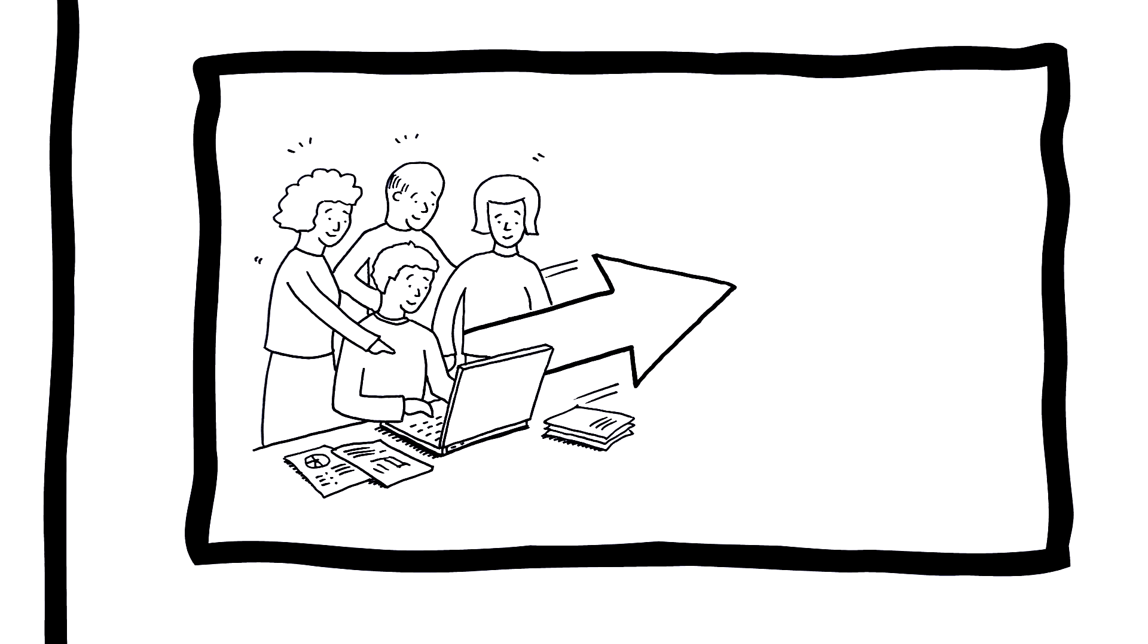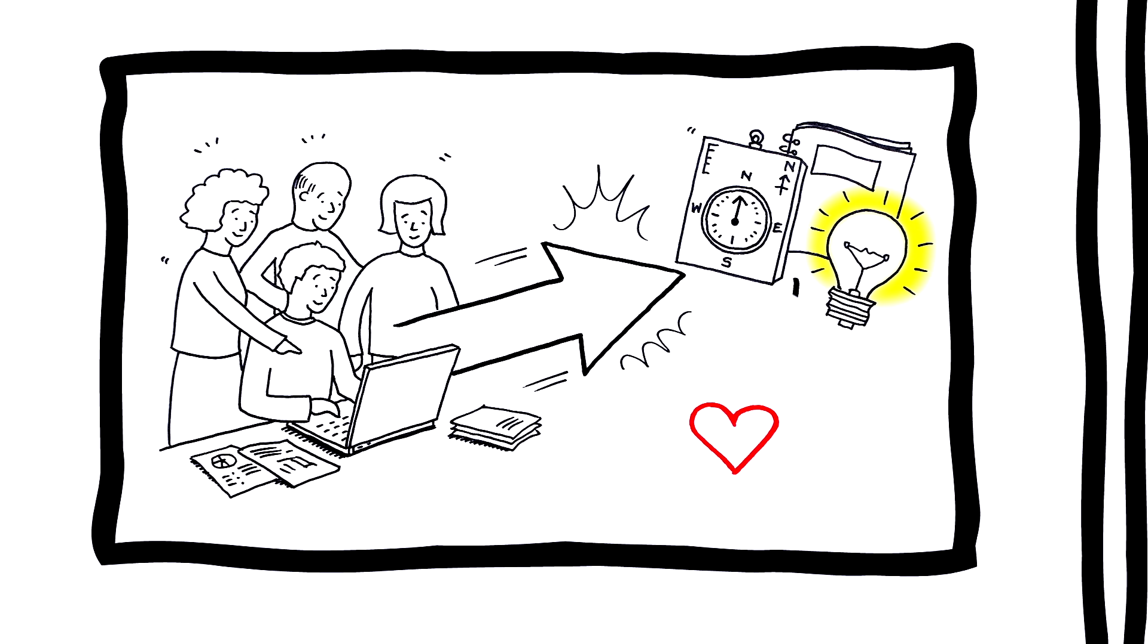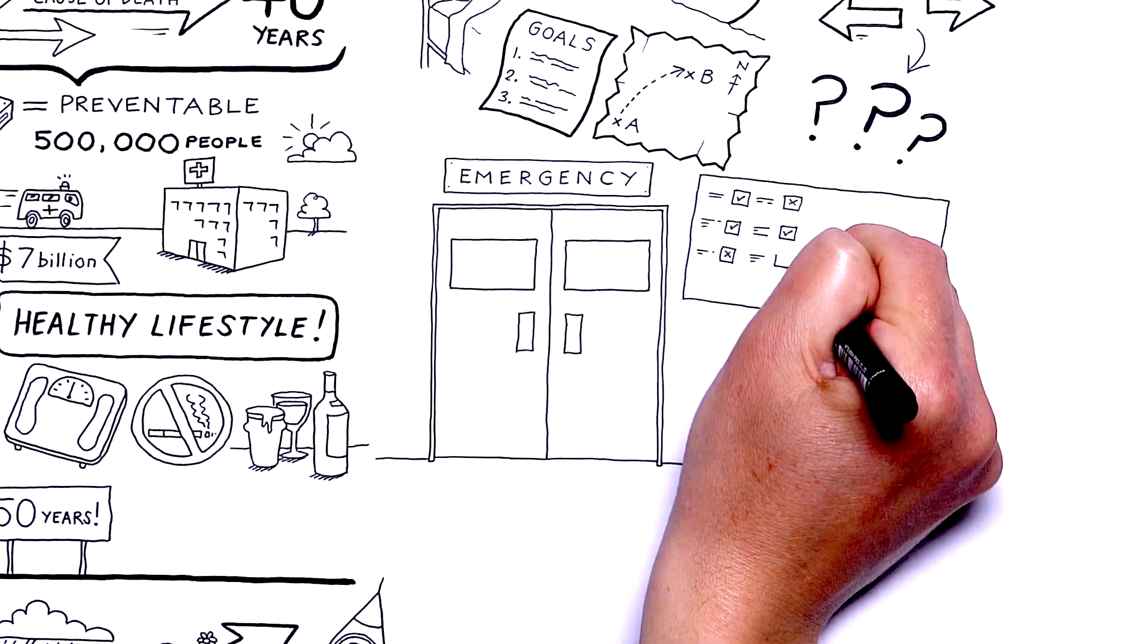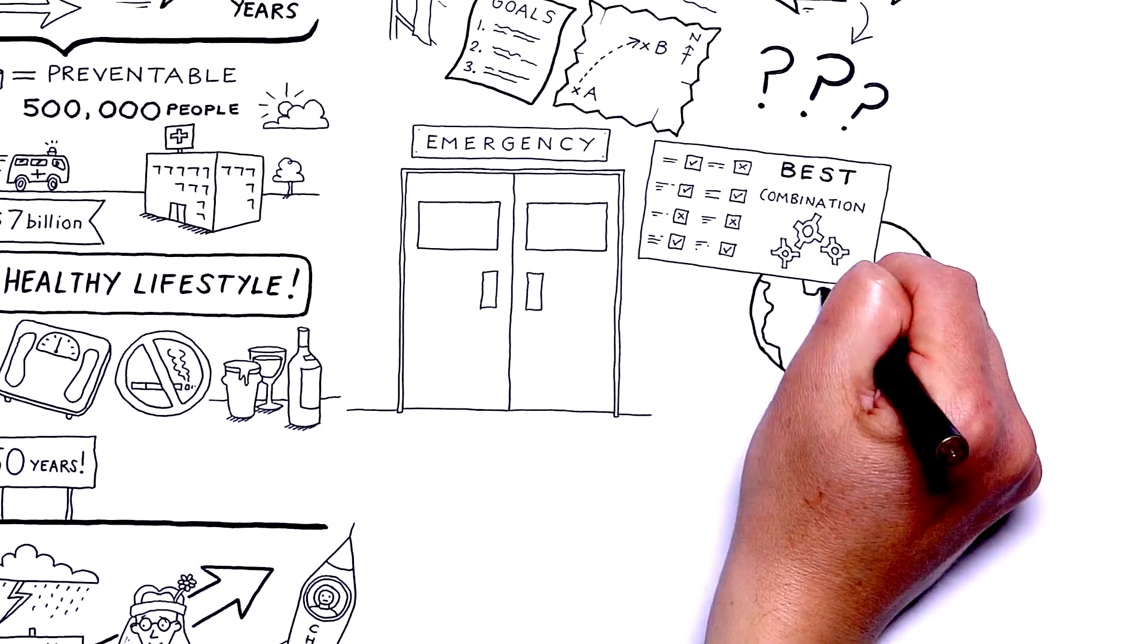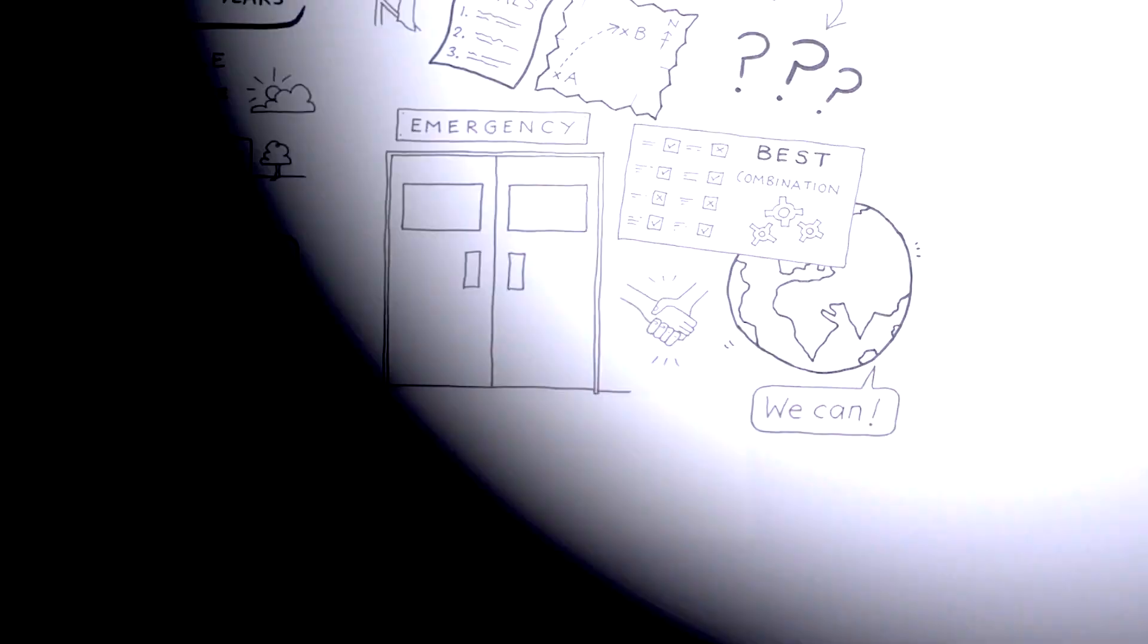What if, together, we could test the potential impact of different strategies and policies on cardiovascular disease in Australia? Like training in simulated race conditions before selecting our best combination of activities for the real world. Our own Coalition of the Willing. Well, we can!